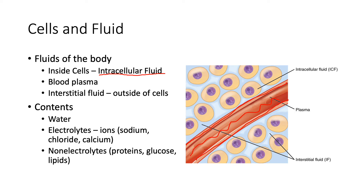The third compartment you may not be as familiar with is called interstitial fluid. This is just the fluid that is outside of cells. In the image to the right, all of the area shown in blue represents the interstitial fluid. Osmoregulation involves all three of these compartments — a balance of the correct amount of water and solutes in all of them.